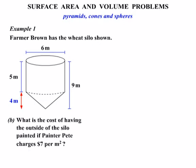Now in Part B, we're asked, what's the cost of having the outside of the silo painted if painter Pete charges $7 per square meter? So let's have a look at our cylinder first. We'll call that SA1.